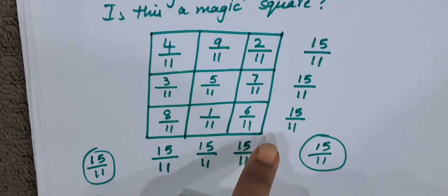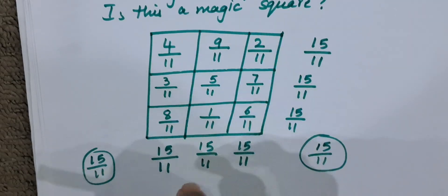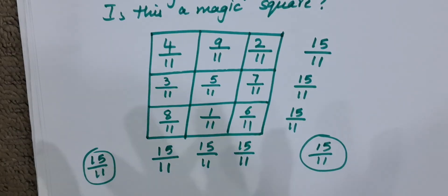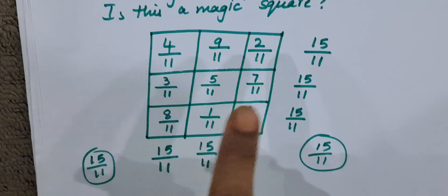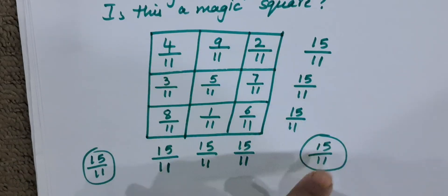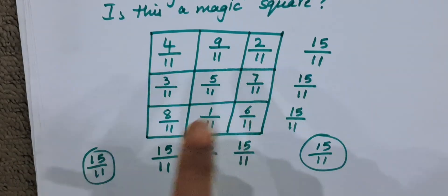All the columns, the answer is 15 by 11 and all the rows also, answer is 15 by 11. So 15 by 11 is the same. It is the same answer for the sum of each and every row, column, and diagonal. So it is a magic square.